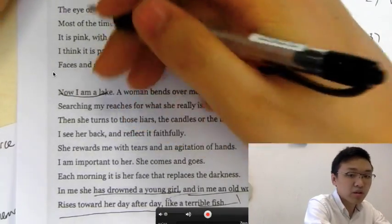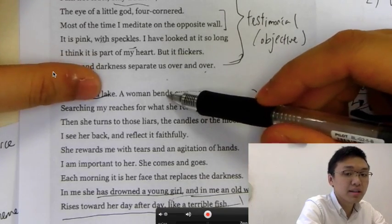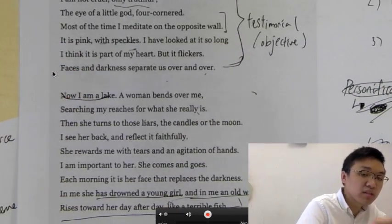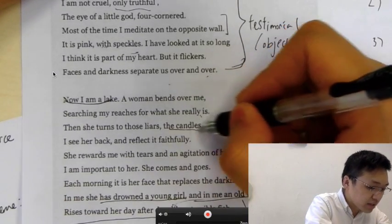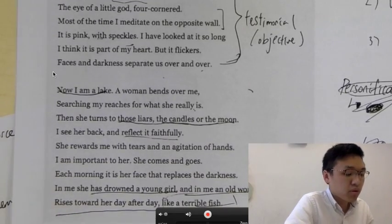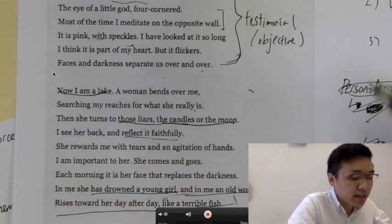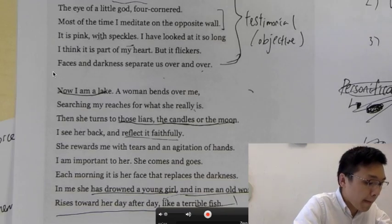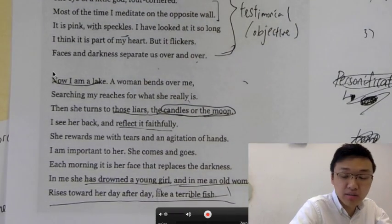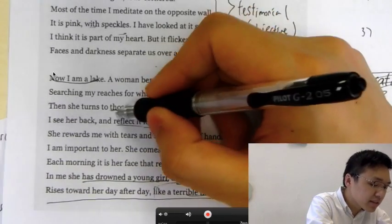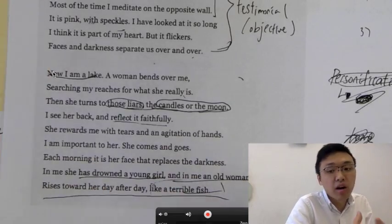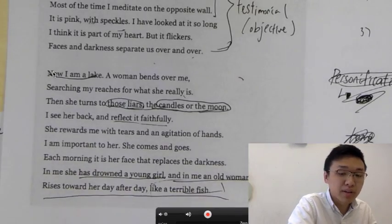So now he's describing itself as a lake. A woman bends over me. So this woman is basically Sylvia Plath, searching my reaches for what she really is. So Sylvia Plath is desperately looking at the mirror, trying to figure out, reaching into the mirror and see how she really looks like. Then she turned to those liars, the candles or the moon. I see her back and reflected faithfully. So she turned to those liars. You kind of get the sense that she's trying to look for people who are going to lie for her. She turns to the liars who tell Sylvia Plath that she's still beautiful. Candles and moons, if you're under a candle and moon, you look more beautiful than you actually is.